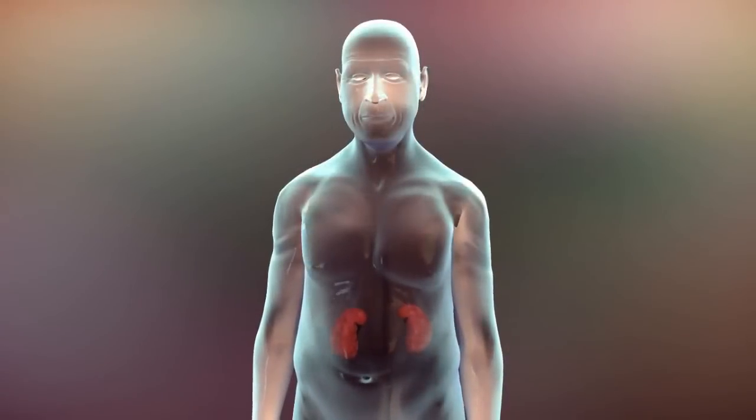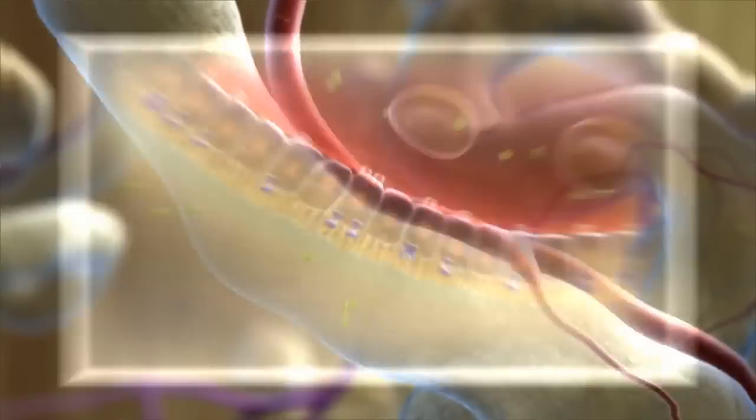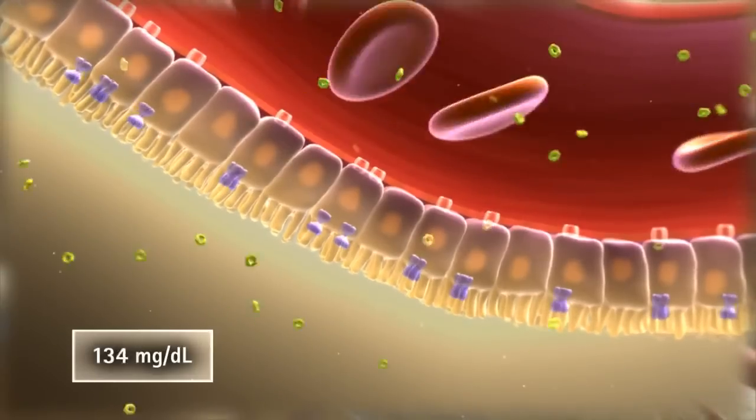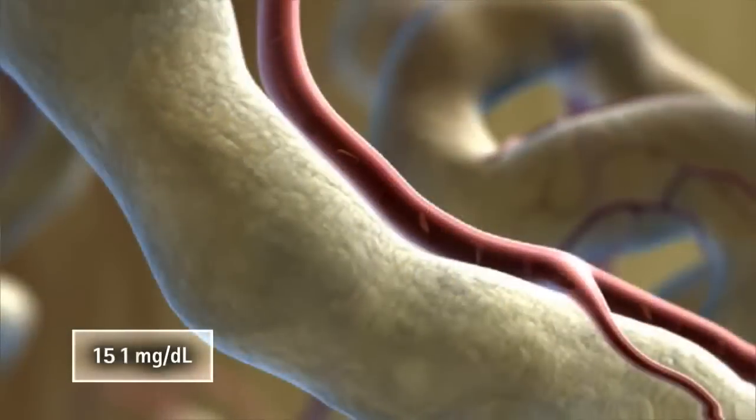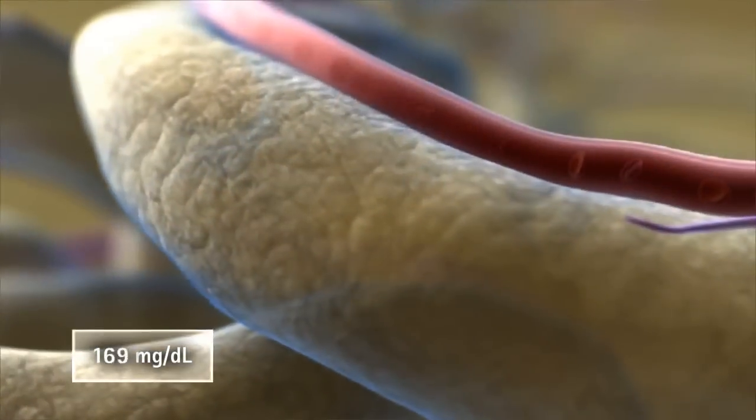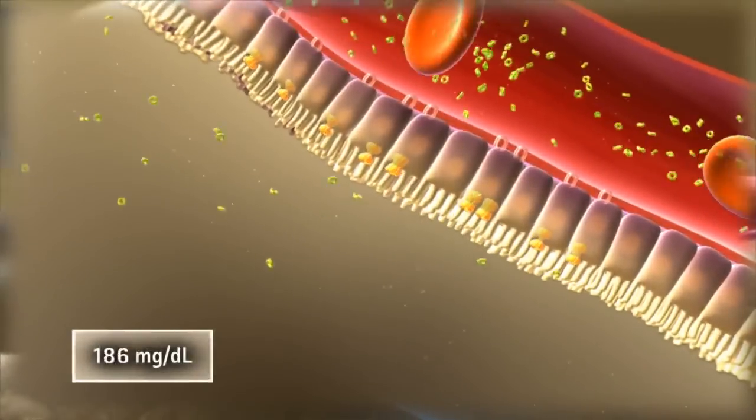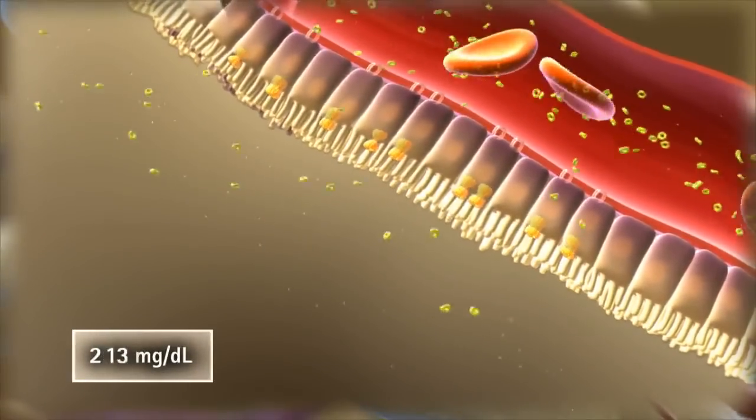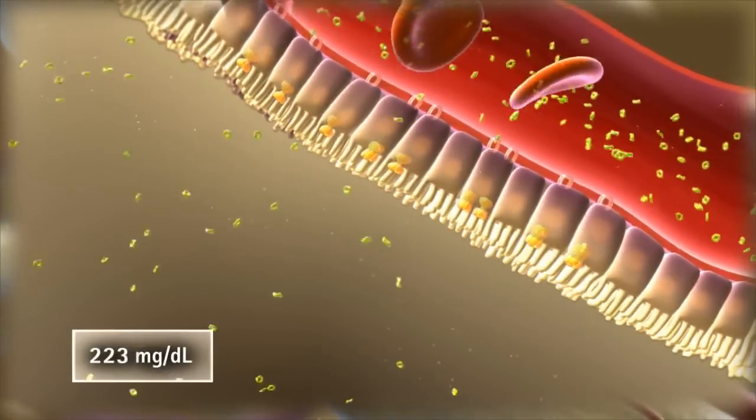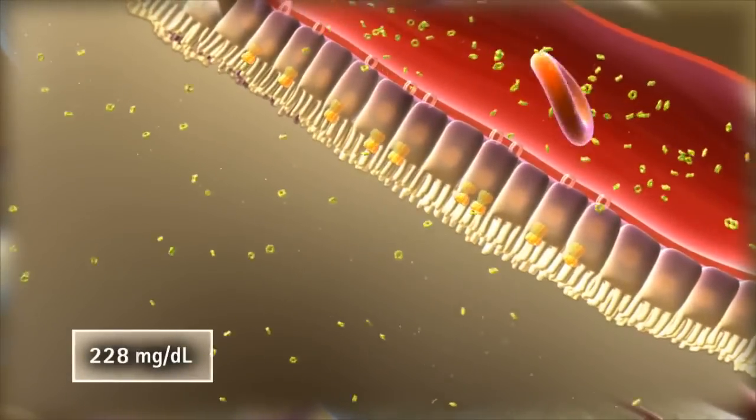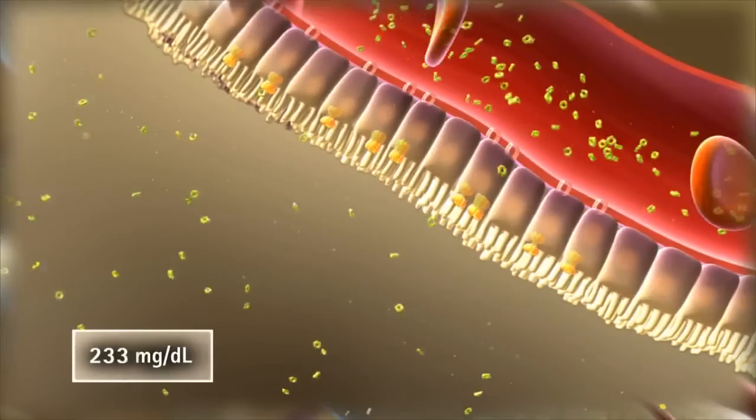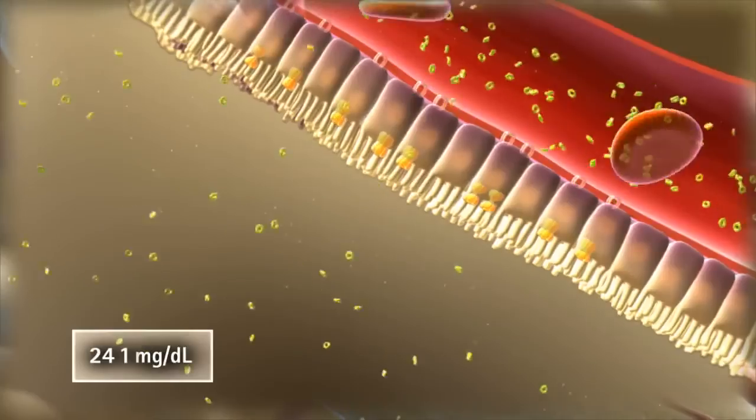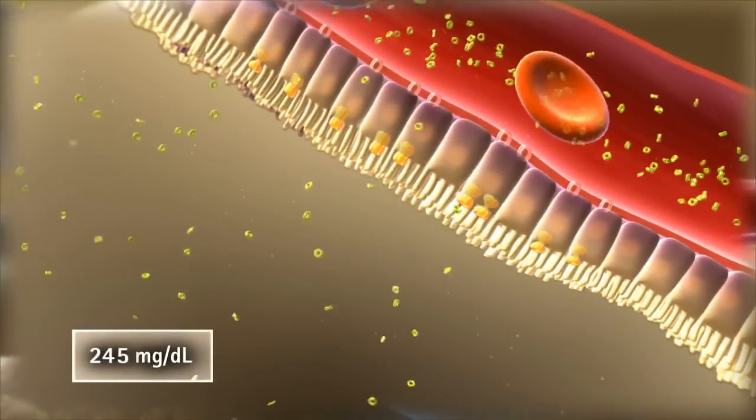In the diabetic state, the kidneys continue to reabsorb virtually all filtered glucose, despite the presence of hyperglycemia. Complete reabsorption of filtered glucose persists until plasma glucose concentrations exceed 200 mg per deciliter, at which point the glucose load in the filtrate overwhelms the capacity of the transporters, the maximum transfer rates attainable by SGLT2 and SGLT1, thus allowing glucose to be cleared in the urine.